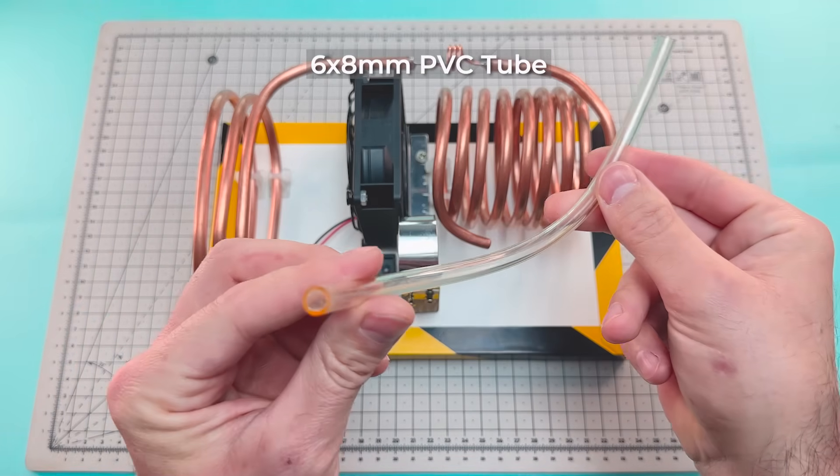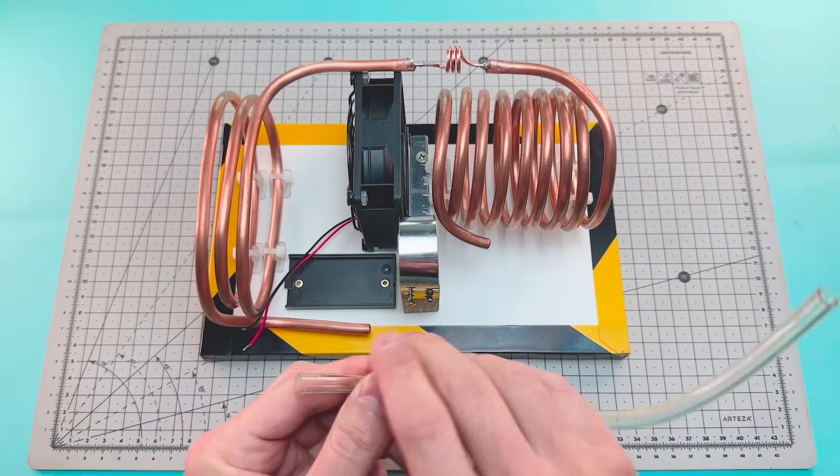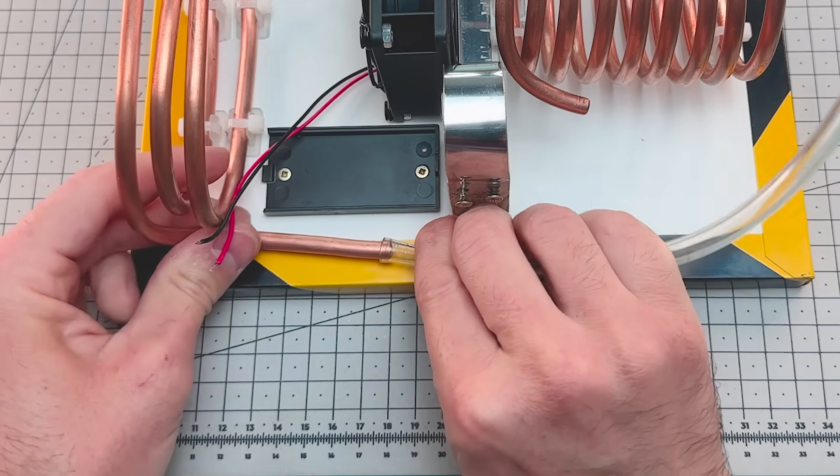We'll cut a PVC tube into two pieces and connect them to the outlets of the condenser and the evaporator.